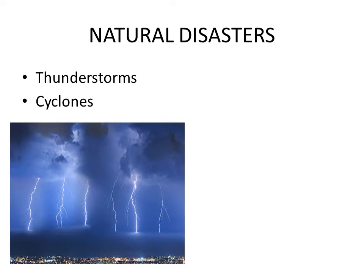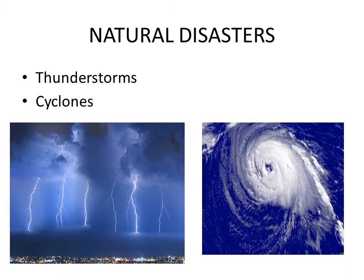Cyclones are huge revolving storms caused by winds blowing around a central area of low atmospheric pressure. When warm air rises from the seas and condenses into clouds, massive amounts of heat are released, resulting in a mixture of heat and moisture — a collection of thunderstorms from which a tropical storm develops. Cyclones develop over warm seas near the equator. The air heated by the Sun rises swiftly, creating areas of very low pressure. Cool air rushes in, and due to the Earth's rotation, air is bent inwards and then spirals upwards with great force.